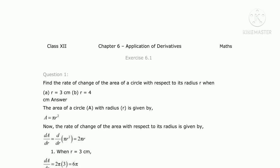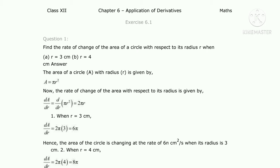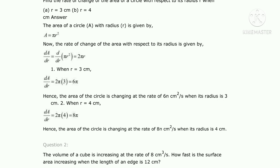Two values of radius are given. For r equals 3: dA/dr equals 2π(3) equals 6π. Hence the area of a circle is changing at the rate of 6π centimeter square per second when radius is 3. For r equals 4: dA/dr equals 8π centimeter square per second when radius is 4.